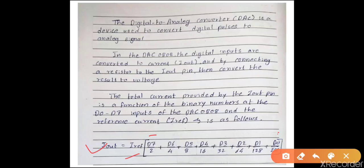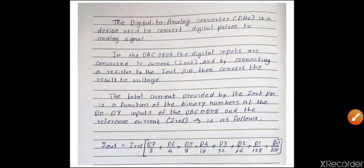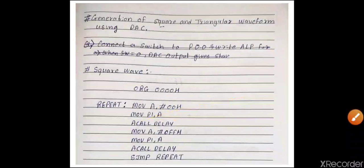If D0 to D7 pins are all 0, then I_out will be 0. So the output current will vary from 0 milliampere to 2 milliampere, and with the op-amp you can convert it to a voltage of 0 to 10 volts. In the next slide we'll see some basic programs using DAC. This is the basic program for generation of a square wave using DAC.